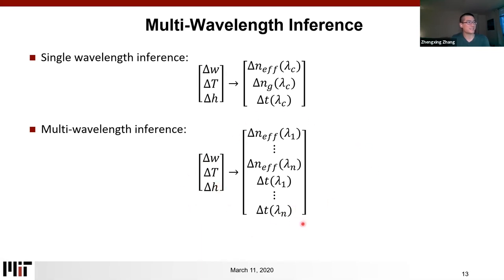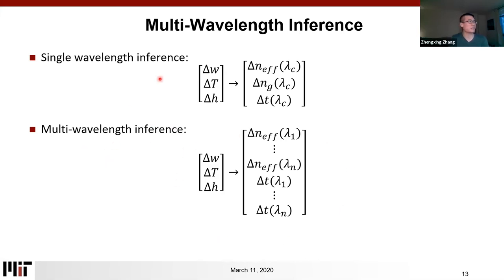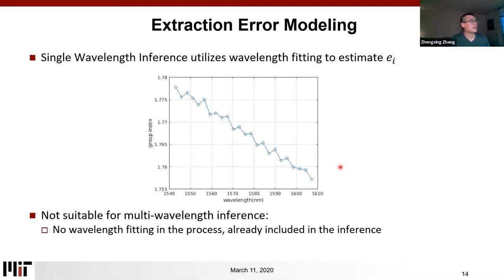This multi-wavelength approach is more complicated than the one-to-one single-wavelength relationship, but we will show solutions for both single-wavelength inference and multi-wavelength inference. For the final result we use multi-wavelength inference, but single-wavelength inference is easier to understand for some of the issues. Now we will talk about how we solve the challenges just mentioned.